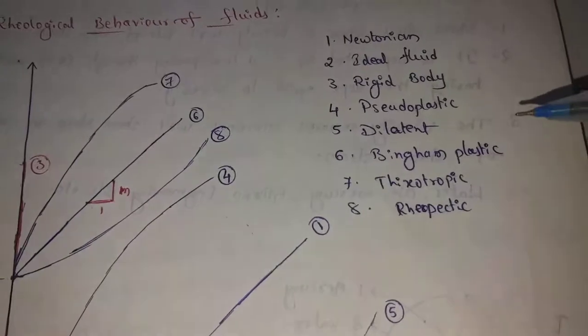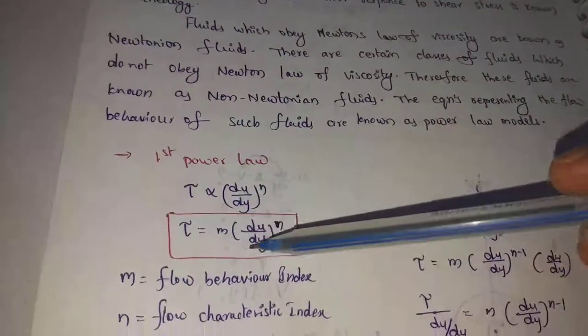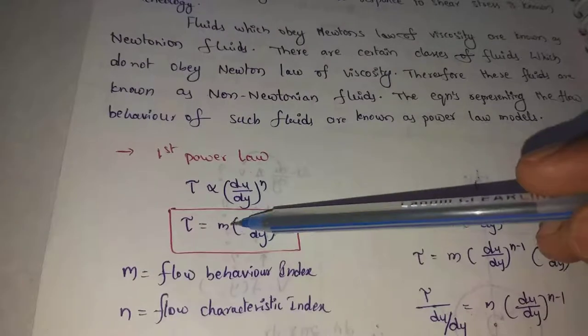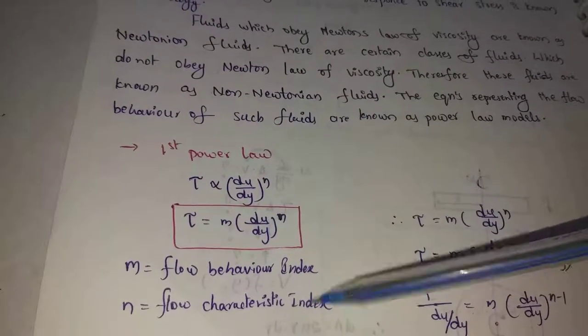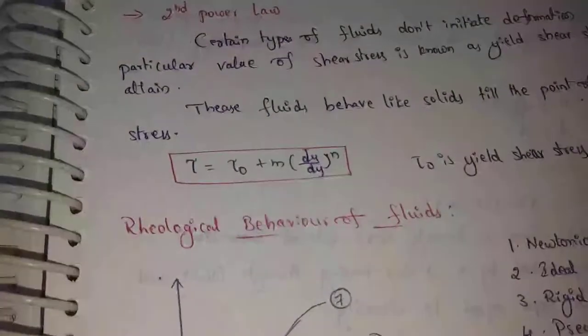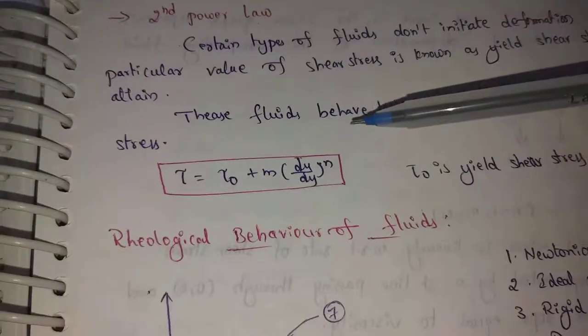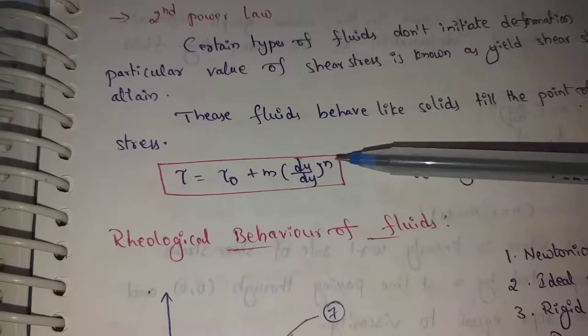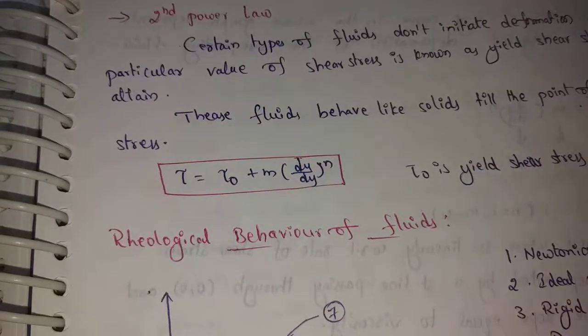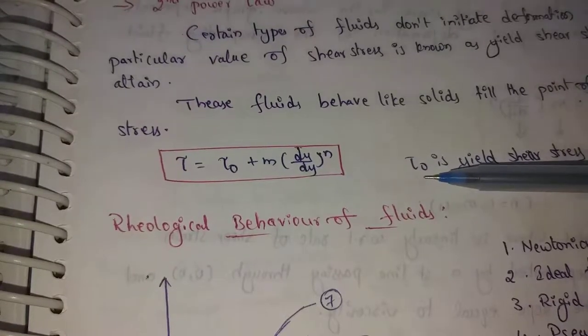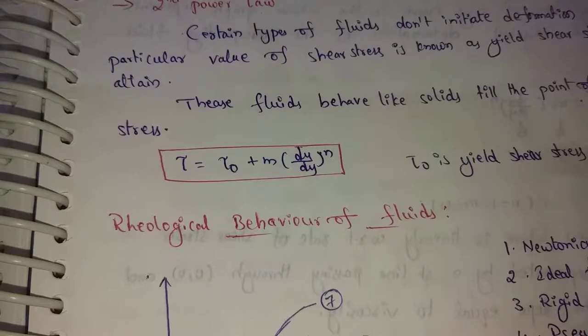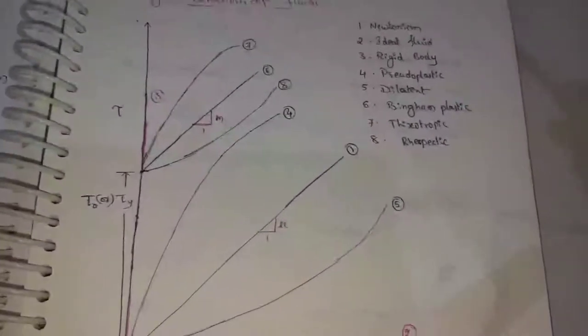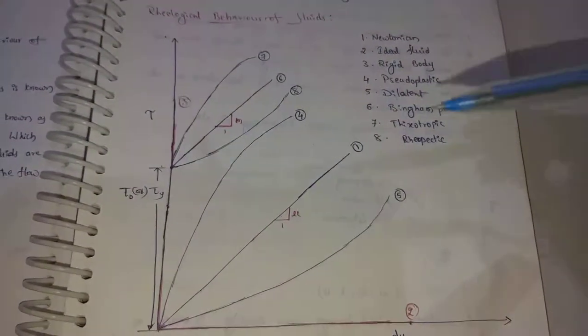First, we will discuss the formula. The formula is important: tau equal to m into du by dy whole power n. Here, m into du by dy whole power n. t0 is yield shear stress.